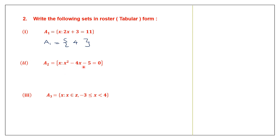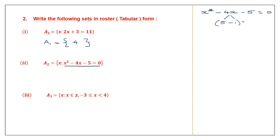Question 2b: X is such that X squared minus 4X minus 5 equals 0. This is a quadratic equation. I'm going to split the middle term: instead of 4X, I can write 5 minus 1, since 5 minus 1 is still 4 — so it becomes 5X minus 1X. Writing it out: X squared minus 5X plus 1X minus 5 equals 0.